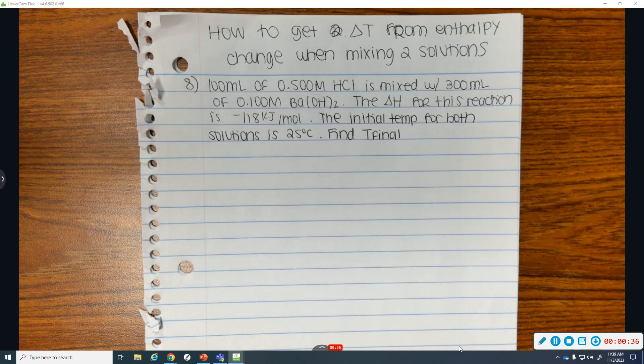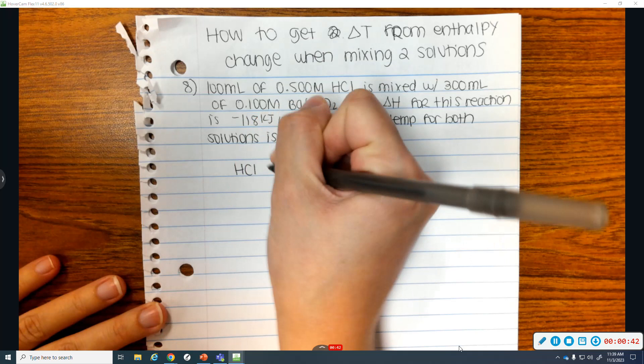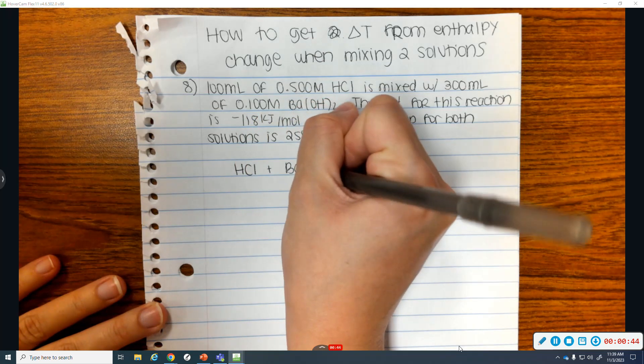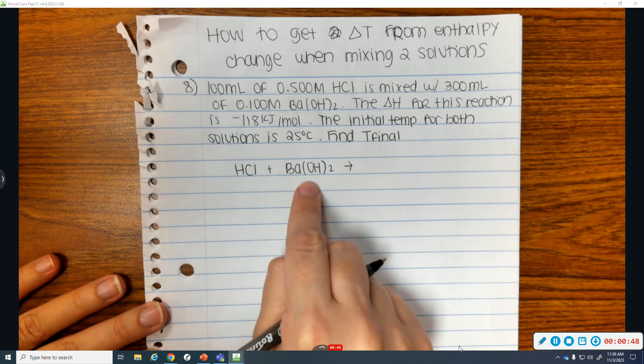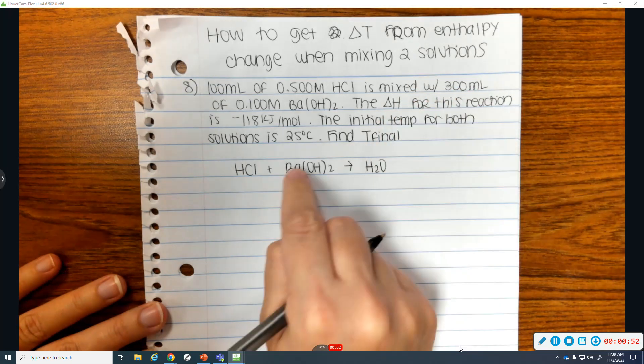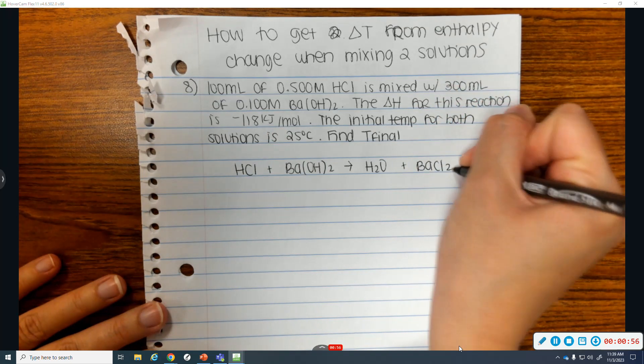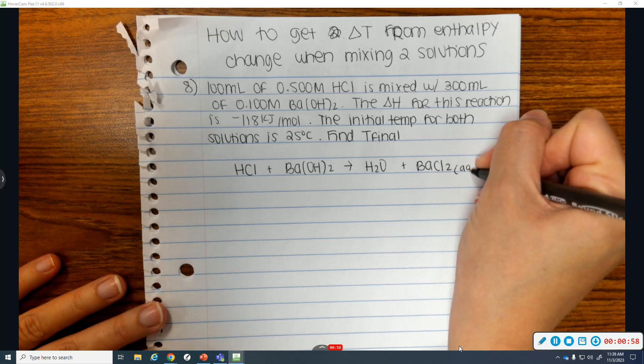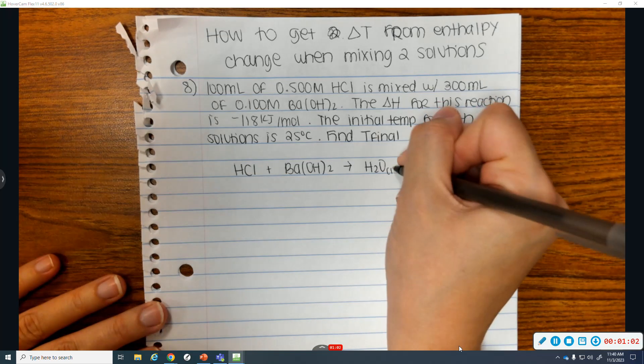So, the first thing you want to do anytime you have two solutions is write your chemical reaction. So, this would be HCl plus barium hydroxide. That's an acid-base reaction, so it's going to make water and HCl2, that is aqueous because it has chlorine. Anything that has chlorine is aqueous. Water is liquid.